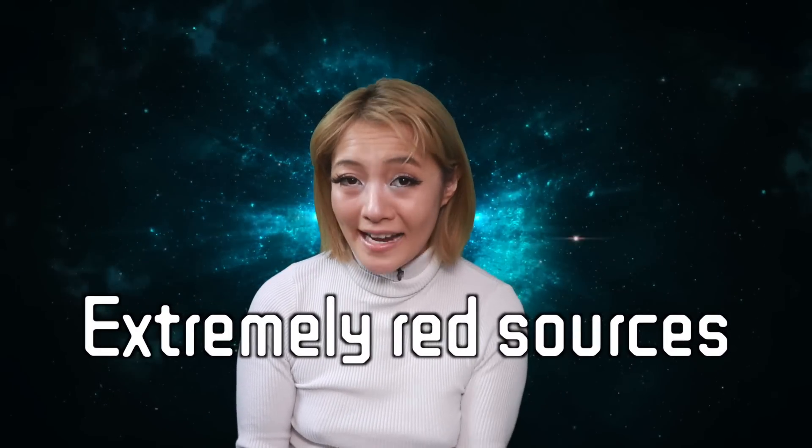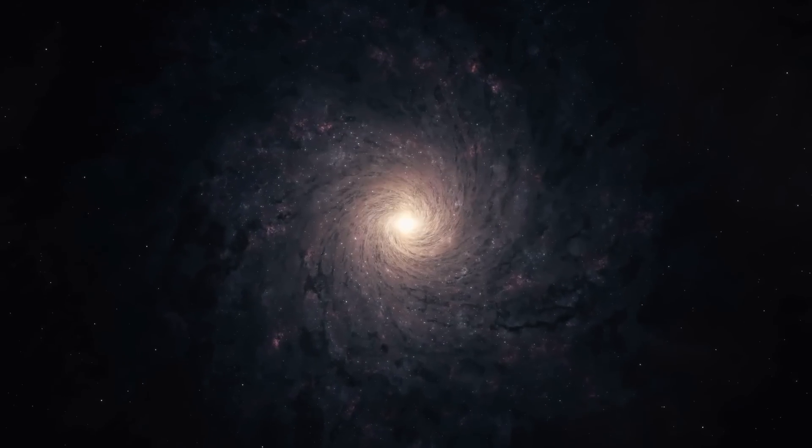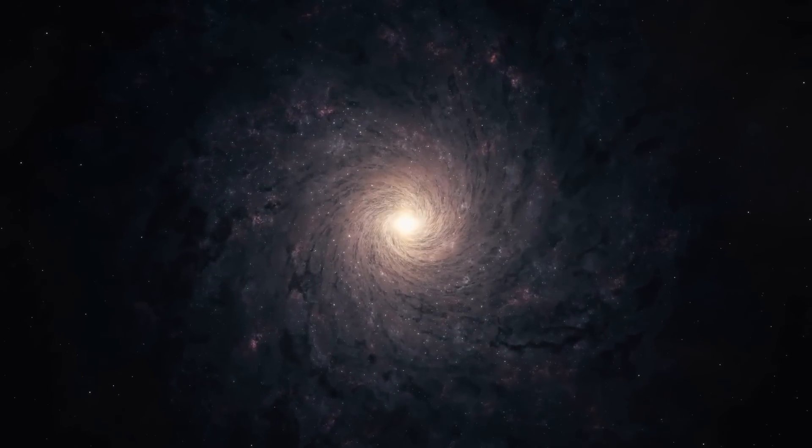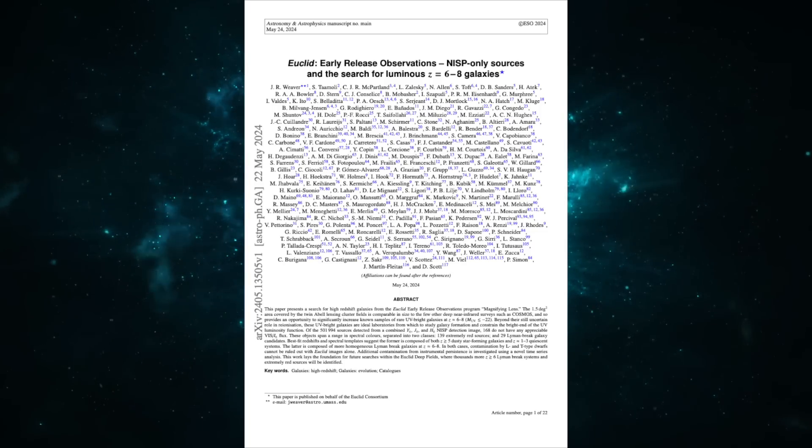139 are extremely red sources, ERSs, which will also be very far away galaxies but not quite so far away as LBGs. They're still useful to learn about the early stages of the universe's evolution and how galaxies formed. It's so important that these sources made a paper for themselves.